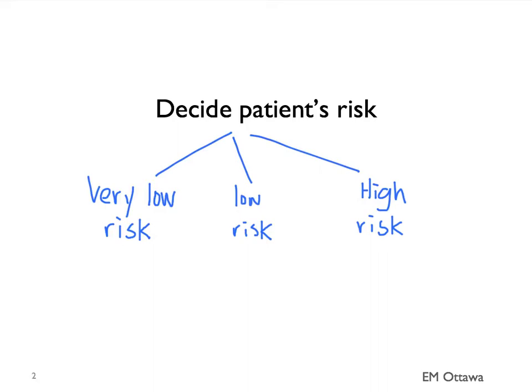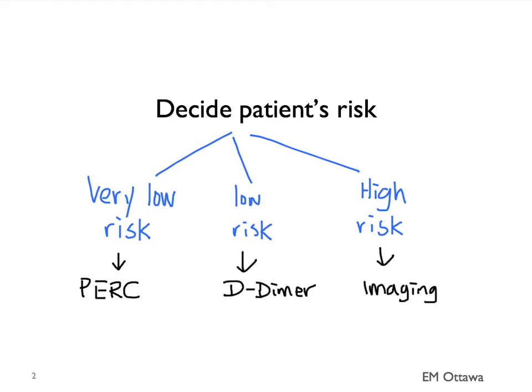In the very low risk patient, we will use a rule known as the PERC rule. In the patient with low risk, we will use the D-dimer test. And in the high risk patient, we rely on imaging. We'll discuss this in detail.